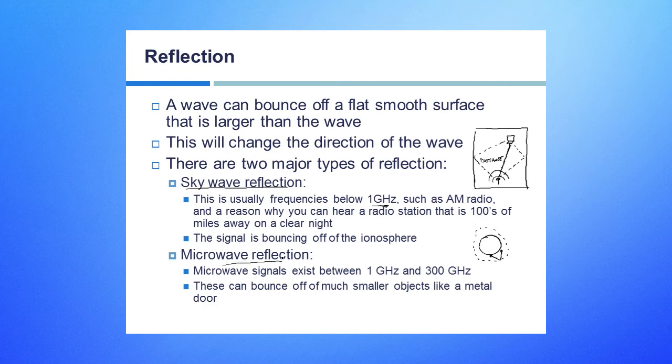Microwave reflection is something we'll see between the gigahertz and the 300 gigahertz. And so when we see this, remember that the reflection, what we said is that when it hits an object that is bigger than the wave, then we would see this reflection. And at this particular case, the signal is going to be faster as we measure them from 1 to 300 gigahertz, and that means that this signal could bounce off of smaller objects, like even just a metal door.